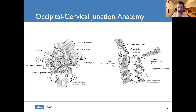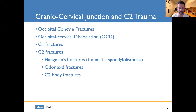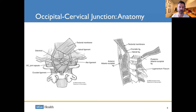The occipital cervical junction is unique — there's a significant amount of soft tissue and ligaments at this junction, and they are particularly important here because they dictate some of our management strategies. Here in a sagittal view, you can see C2 dens and several crucial important ligaments.